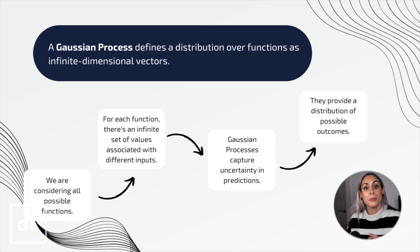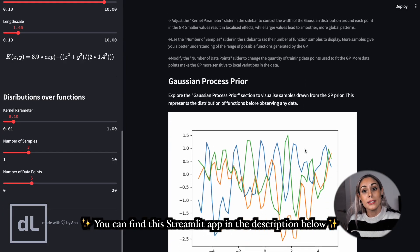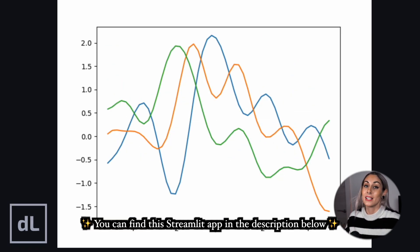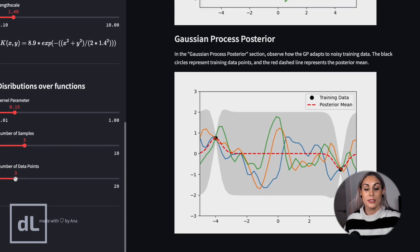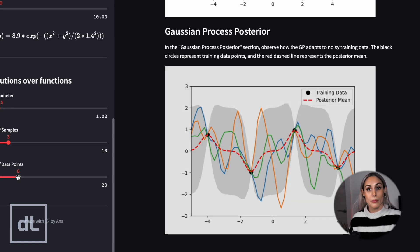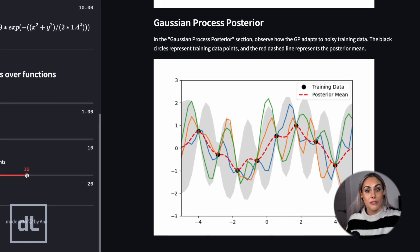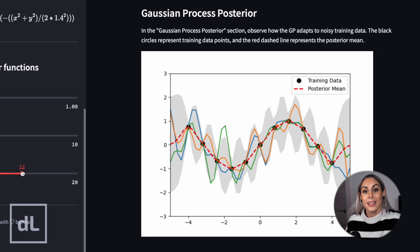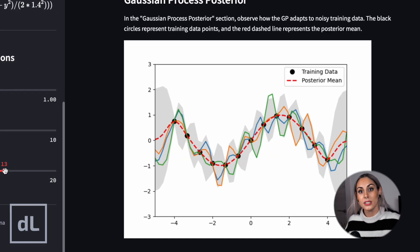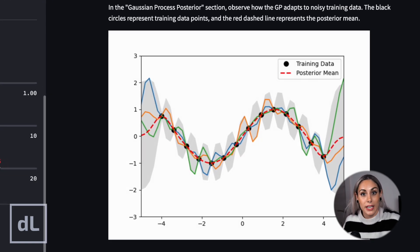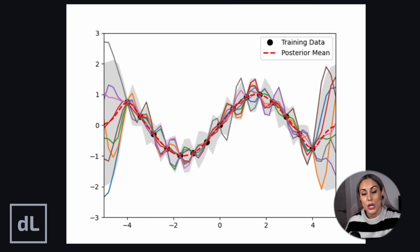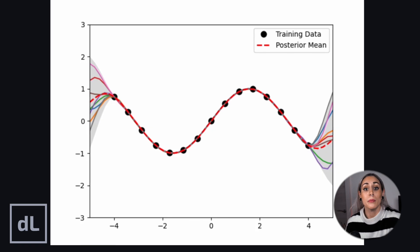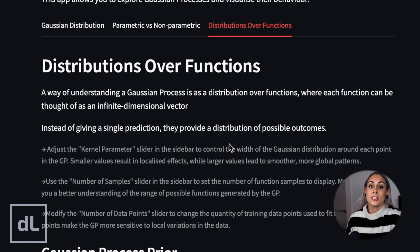After that, we start to collect more data. This restricts the possible functions that could go through it and, as a consequence, we reduce the uncertainty. That's what a Gaussian process does. We believe that before we collect any additional data, the possible functions between points have a certain look — and that's our prior. Then, we collect data and start restricting the functions that agree with our data. Each of these possible functions is like an infinite list of numbers. Since inputs can be any real number, the vector is infinite. So when we say that a Gaussian process defines a distribution over functions as infinite-dimensional vectors, it means we're not picking one specific function but considering all possible functions, and for each function there is an infinite set of values associated with different inputs. This concept allows Gaussian processes to capture uncertainty in predictions — instead of giving a single prediction, they provide a distribution of possible outcomes.